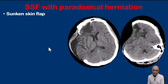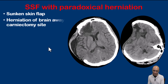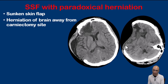The classic imaging appearances would include the sunken skin flap and herniation of the brain away from the craniectomy site — i.e., paradoxical brain herniation to the contralateral side. This happens when the intracranial pressure is lower than the atmospheric pressure.